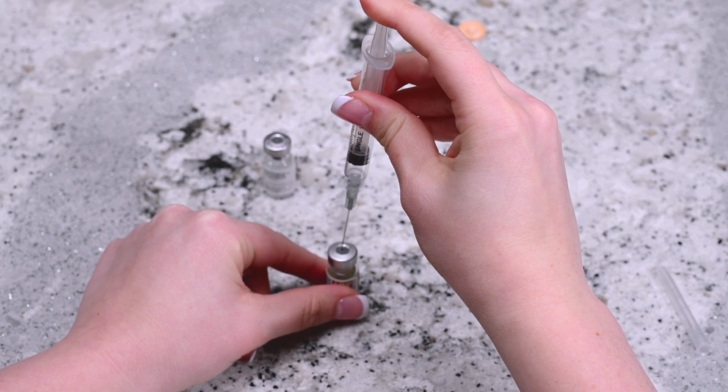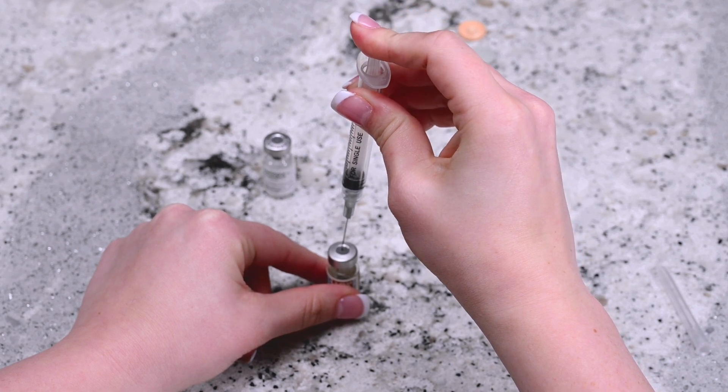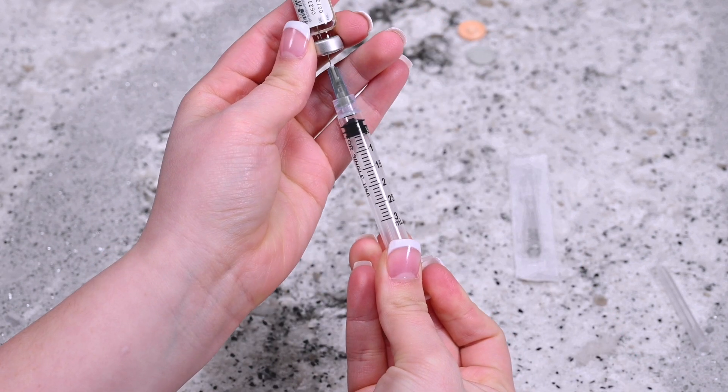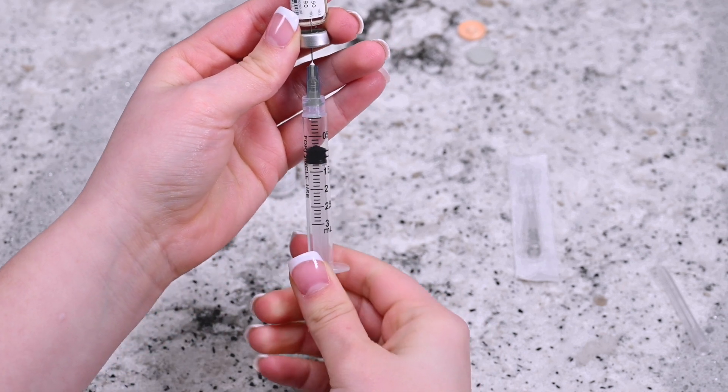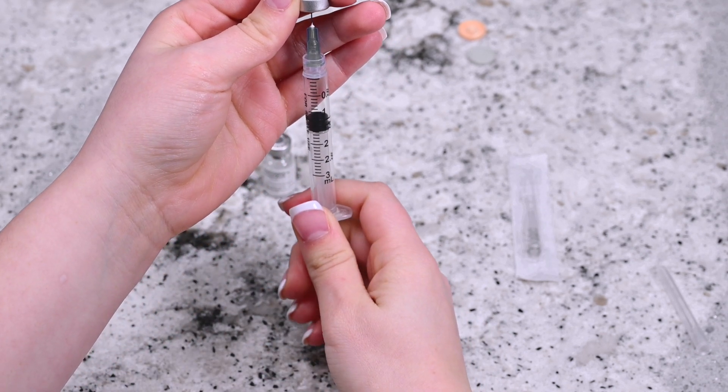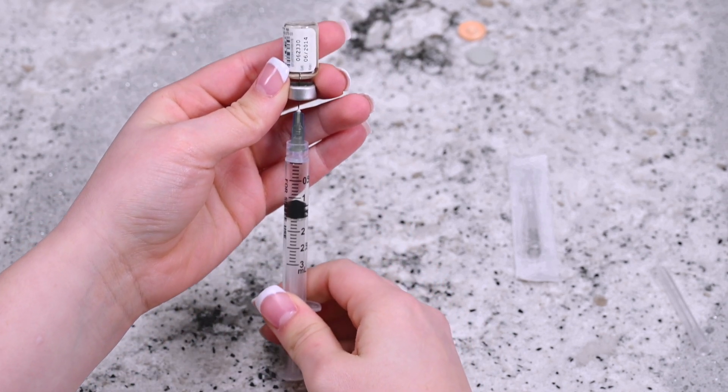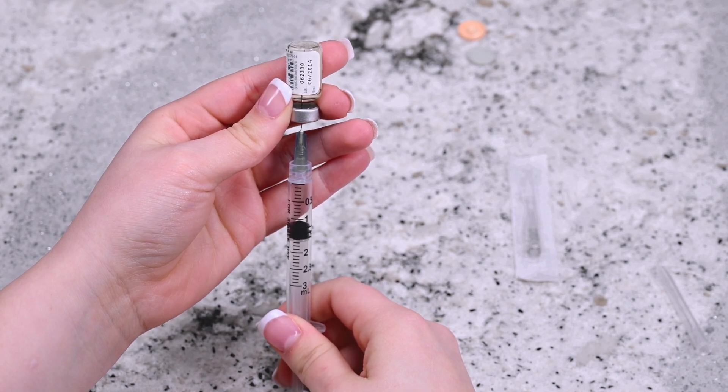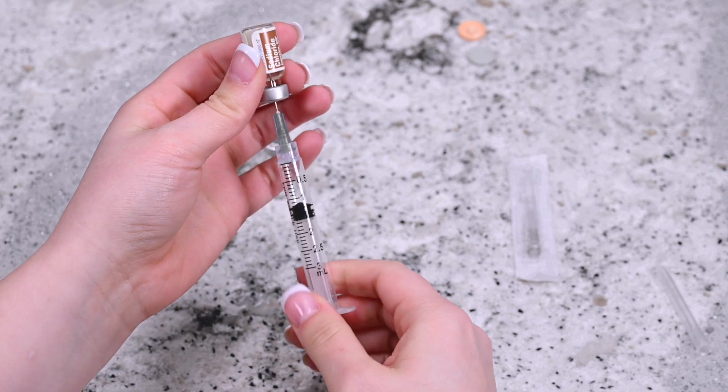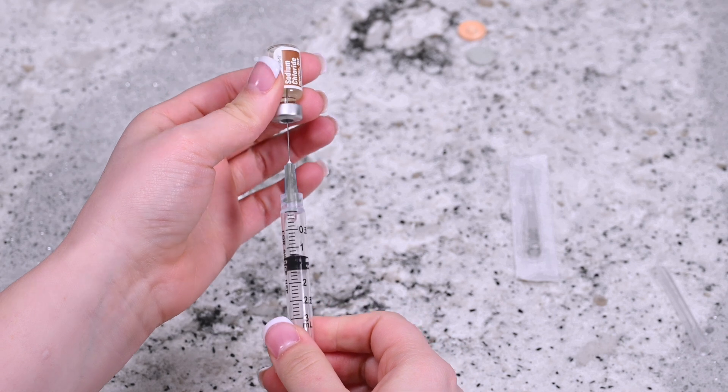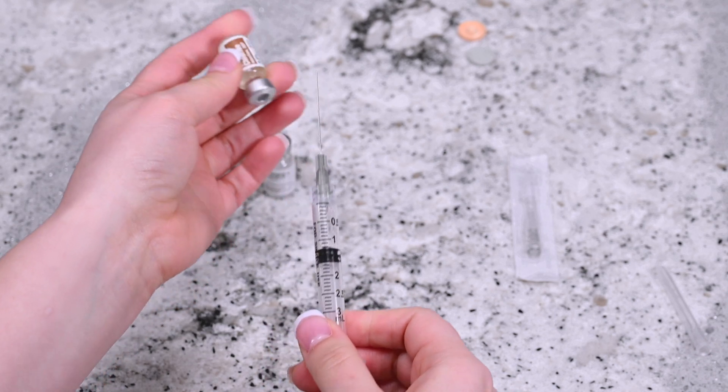Gently apply pressure onto the plunger so that the air transfers from the syringe into the diluent vial. Invert the syringe so that the vial is upside down but still attached to the syringe. Pull the plunger back slightly past the 1 ml mark. Remove the syringe from the vial and set the vial aside.